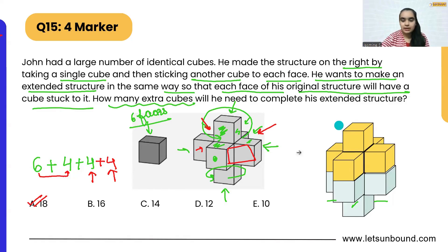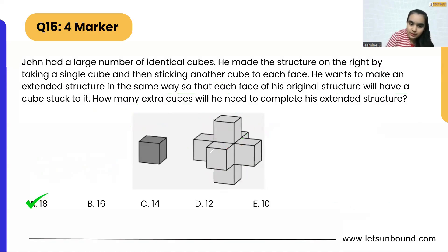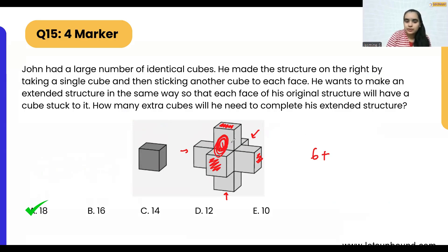To recap: we started from the top popping-out faces — one, two, three, four, five, six — that's six. Then placing one cube to cover two faces along the middle gives us one, two, three, four — four cubes. The same structure is below, so another four.